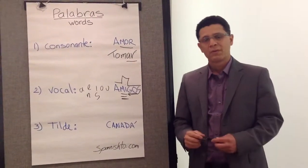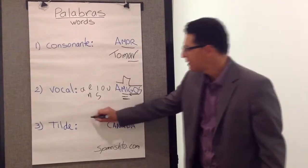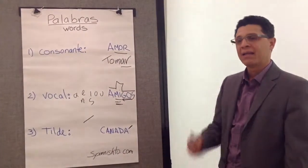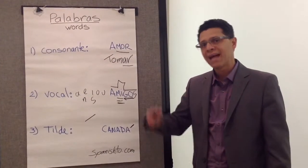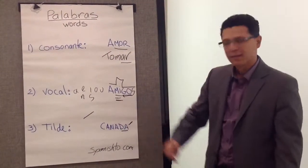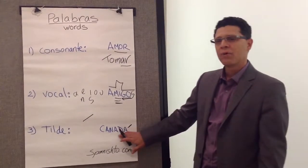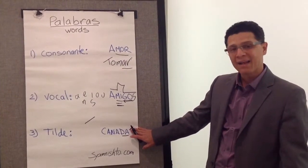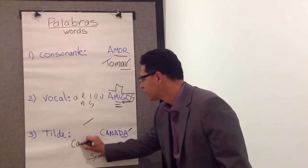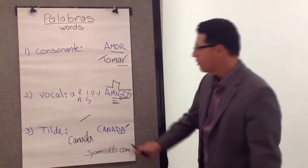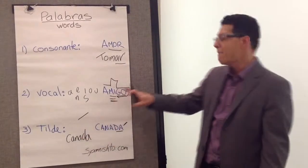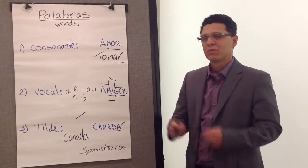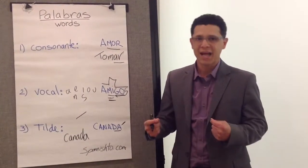Third rule: we call that the tilde rule. The tilde is a symbol that is put on top of a word, like for example Canadá, and it indicates that you have to stress the word in that syllable. If you take away the tilde from the word Canadá, then you would have to pronounce it like the vowel rule — like the amigo rule — so it would be 'canada,' which obviously does not sound right.